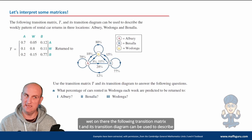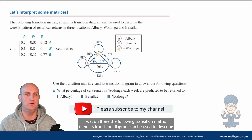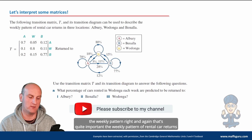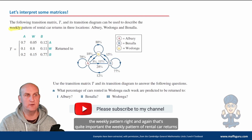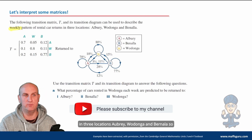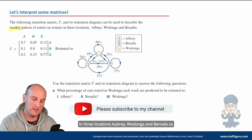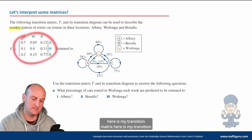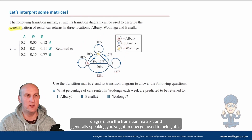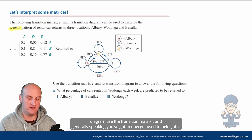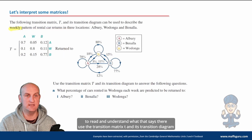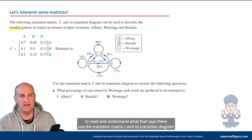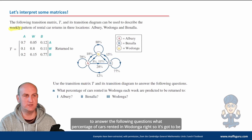So let's go straight into this because we already know the basics. The following transition matrix T and its transition diagram can be used to describe the weekly pattern of rental car returns in three locations: Aubrey, Wodonga, and Banala. Here is the transition matrix, here is the transition diagram. Use the transition matrix T and its transition diagram to answer the following questions.